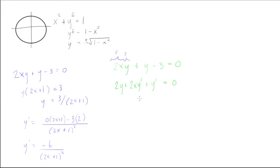So now again, what we can do is we can isolate the y prime. So we're going to get y prime is going to be equal to 2x plus 1, is equal to negative 2y. And so y prime is going to equal negative 2y over 2x plus 1.